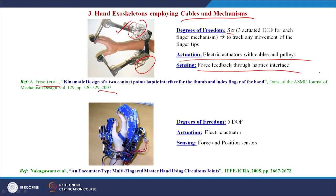The exoskeleton using circuitous joints, proposed by Nakagawara et al., has 5 degrees of freedom — 1 degree of freedom per finger providing flexion and extension of each digit. The actuator is an electric DC actuator, and force and position sensors are utilized for sensing.